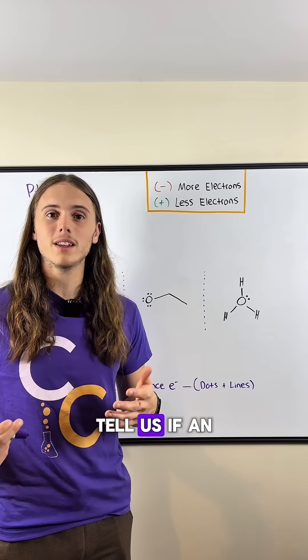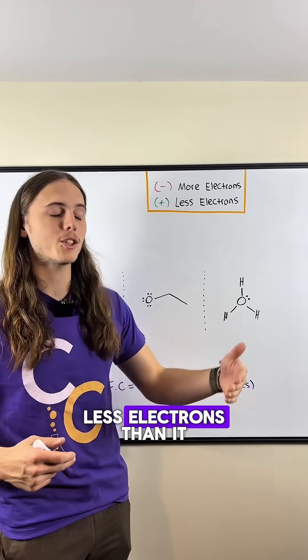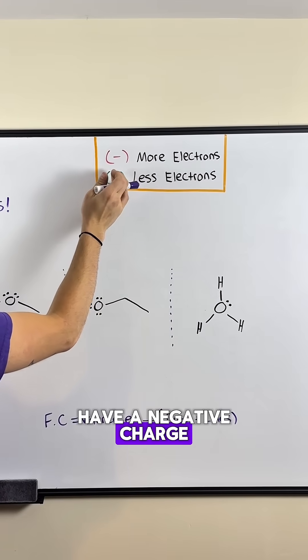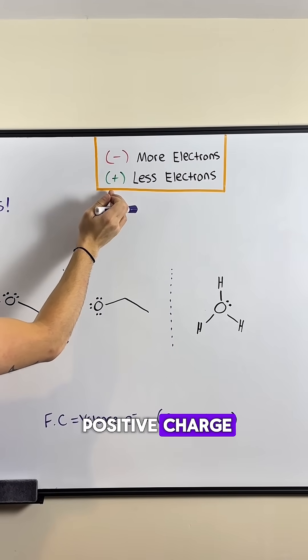Remember, formal charges tell us if an atom has more or less electrons than it normally wants. More electrons means it'll have a negative charge, and less electrons means there will be a positive charge.